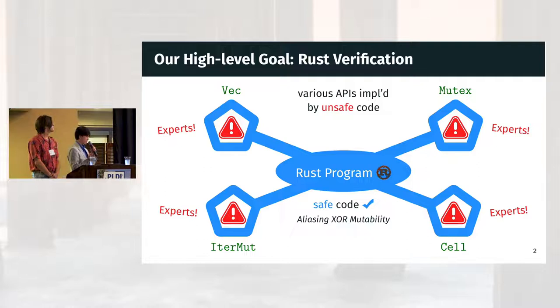But real Rust programs also use various Rust APIs, such as Vec and Mutex. Each of these APIs encapsulates internal implementation written in unsafe code, where low-level operations are unrestricted, just like C or C++. So we want to give a foundation for verifying Rust programs with this combination of safe code and unsafe code.